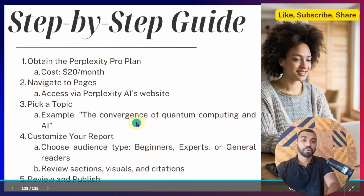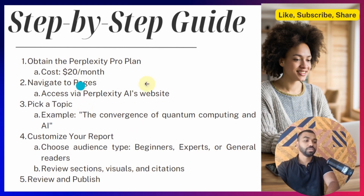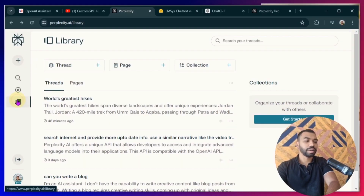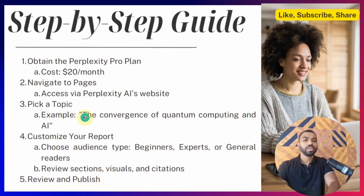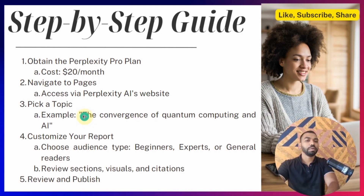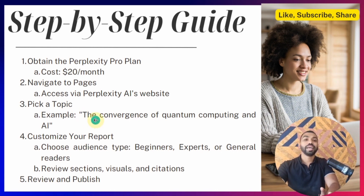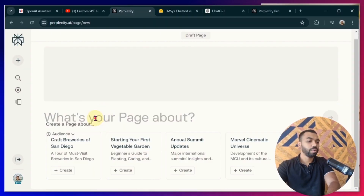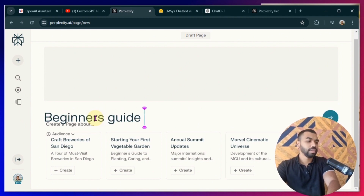Once you've obtained your Pro plan, you need to navigate to Pages. You click this tab right here and then click on the Page feature. Then you can pick a topic of your interest — think about your niche, think about the topics that interest you. It could be a Beginner's Guide to Surfing or Understanding Coffee, anything you can think of. So let's start with Beginner's Guide to Learning AI.